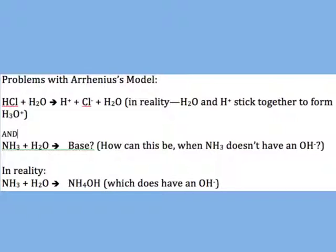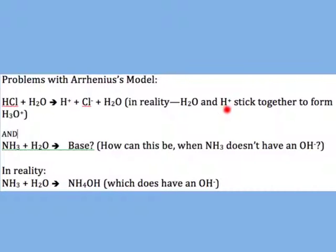The limitations of the Arrhenius model are as follows. First, when acids dissolve in water, the dissociation equation for HCl — hydrochloric acid — plus water would give you H+ plus Cl⁻ plus H₂O. However, because water molecules are polar, the water molecules and the H+ ions — which are essentially just protons — stick together to form a compound called hydronium ion, H₃O+.